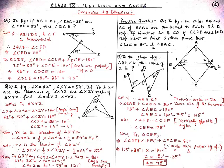We get 35 plus 53 plus angle DCE is equal to 180. Therefore, angle DCE is equal to 180 minus 88, which equals 92 degrees. Therefore, angle DCE is equal to 92 degrees.